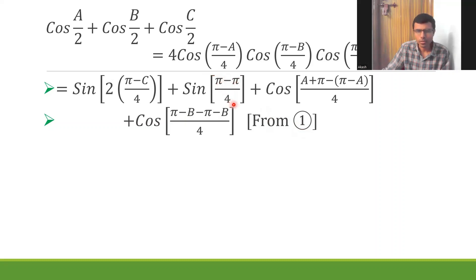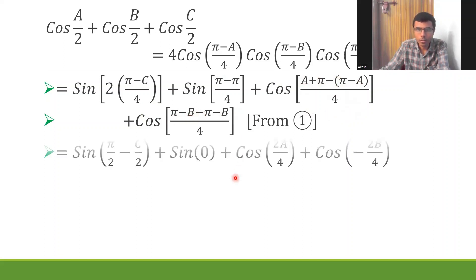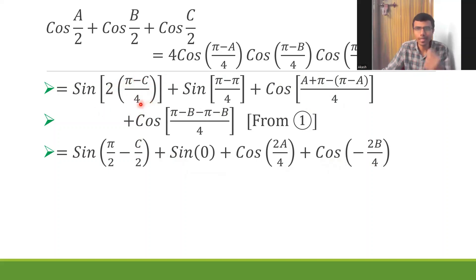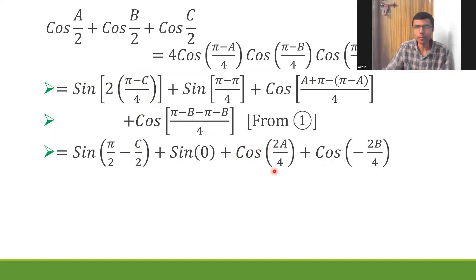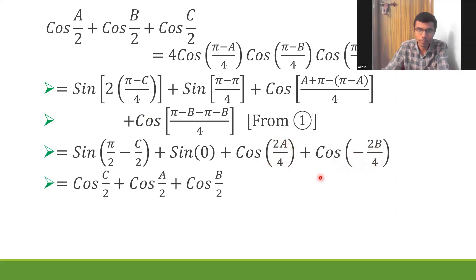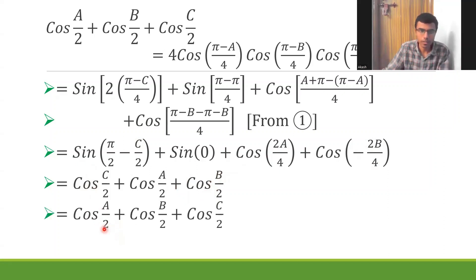After all cancellations — twos cancel, π−π cancels, sine(0) = 0 drops out — I'm left with cos(A/2), cos(B/2), and cos(C/2). Rearranging gives cos(A/2) + cos(B/2) + cos(C/2), which is exactly the LHS. The proof is complete.